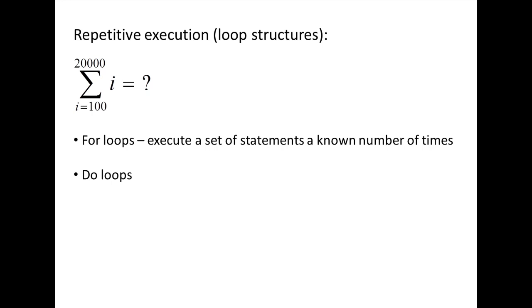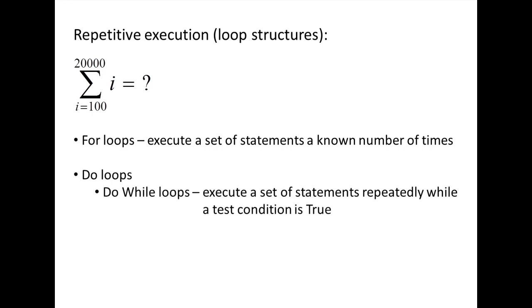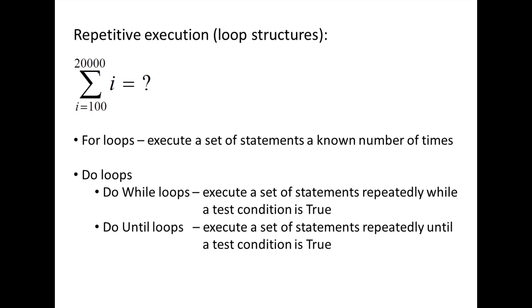There are two types of do loops. Do while loops will execute a set of statements repeatedly while a test condition is true. Do until loops will execute a set of statements repeatedly until a test condition is true. In the next few lessons, you will be introduced to all the different types of loops.